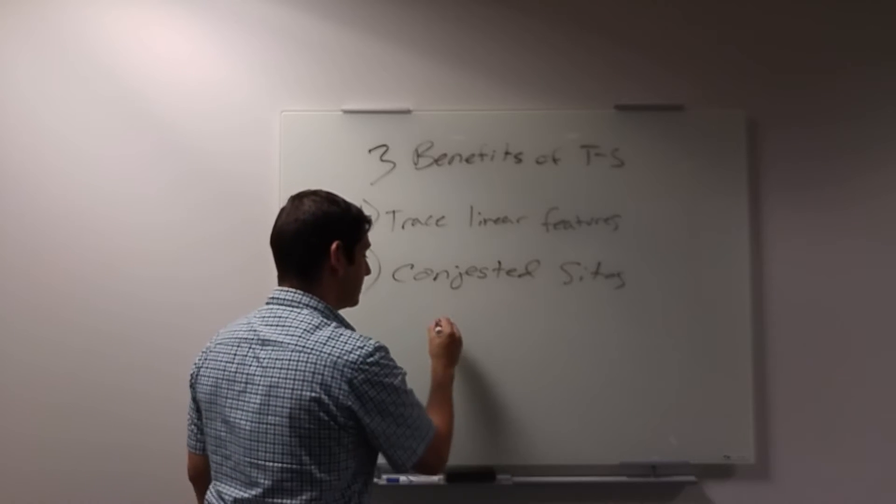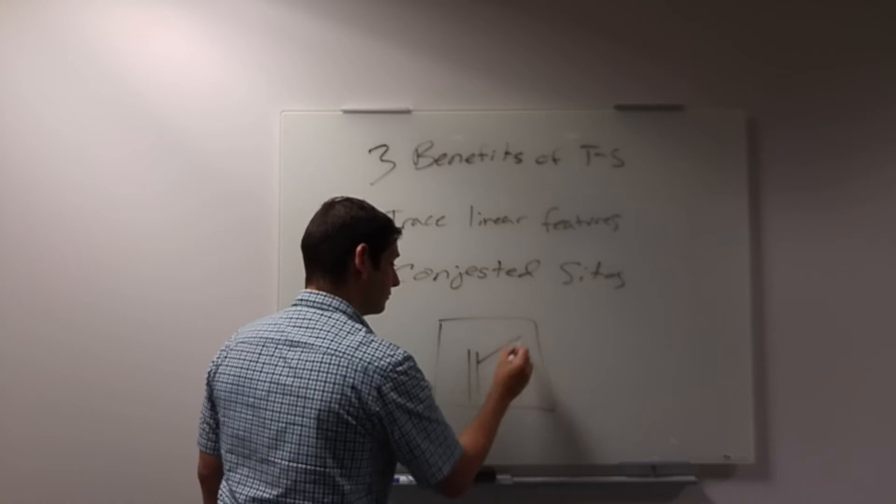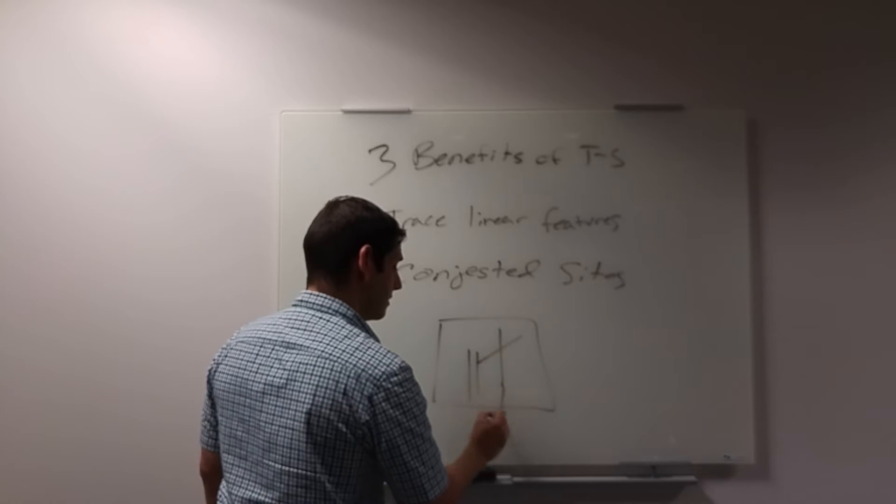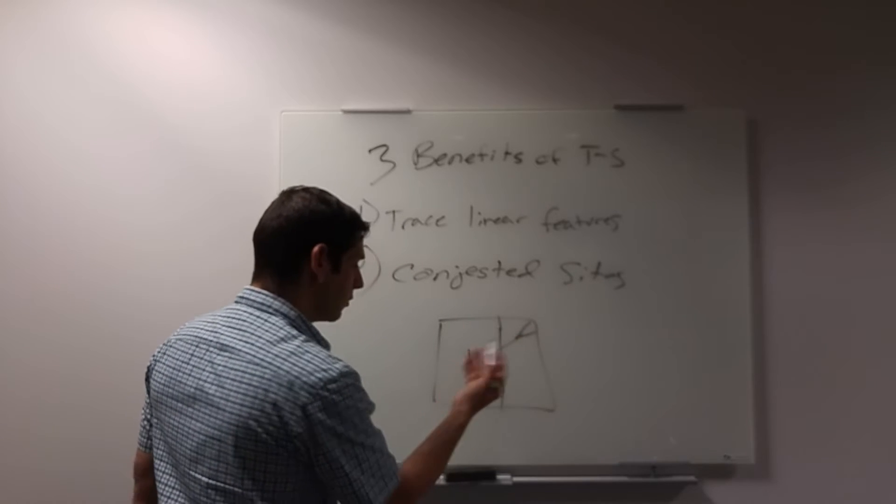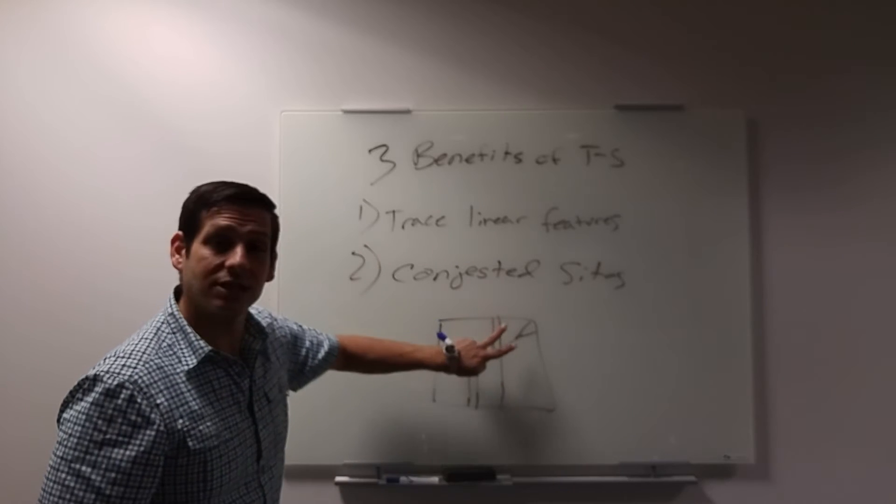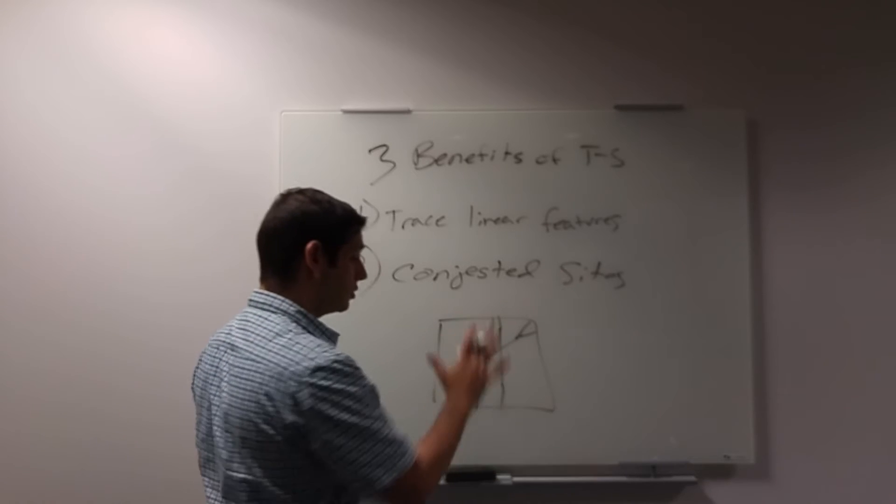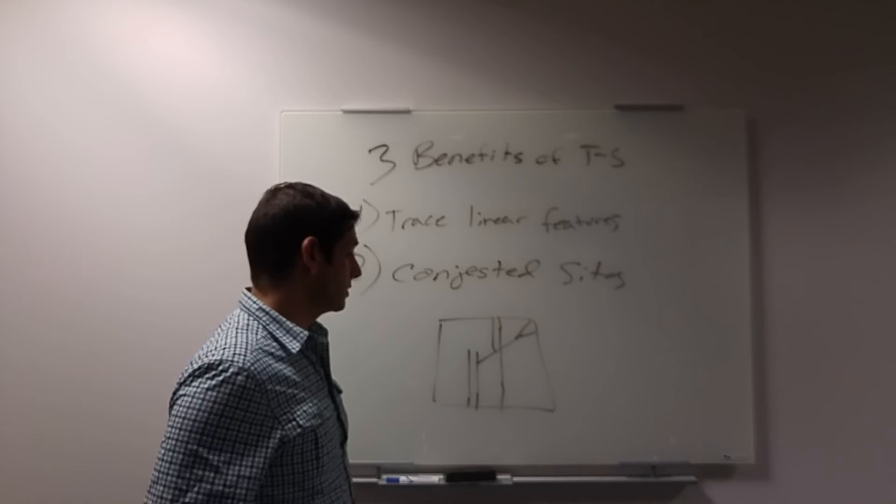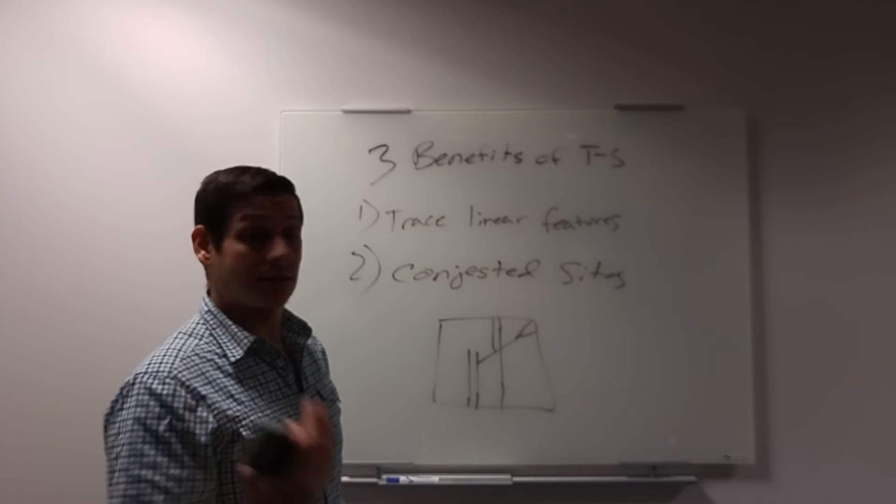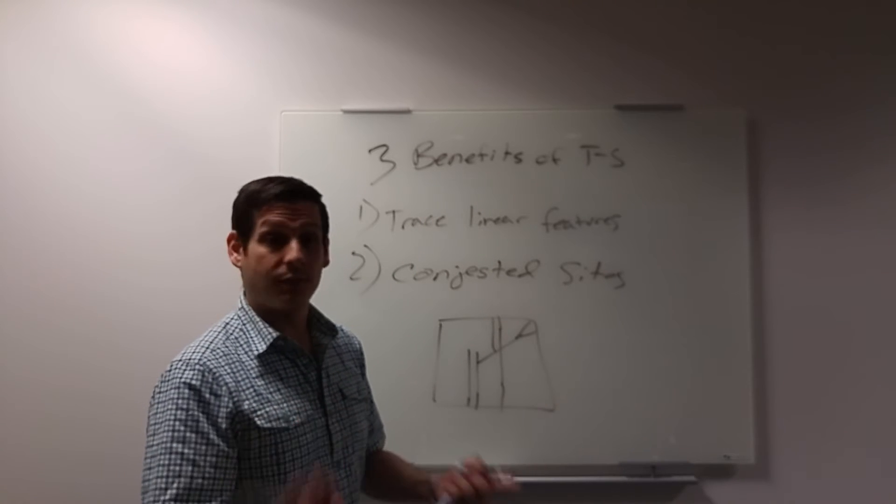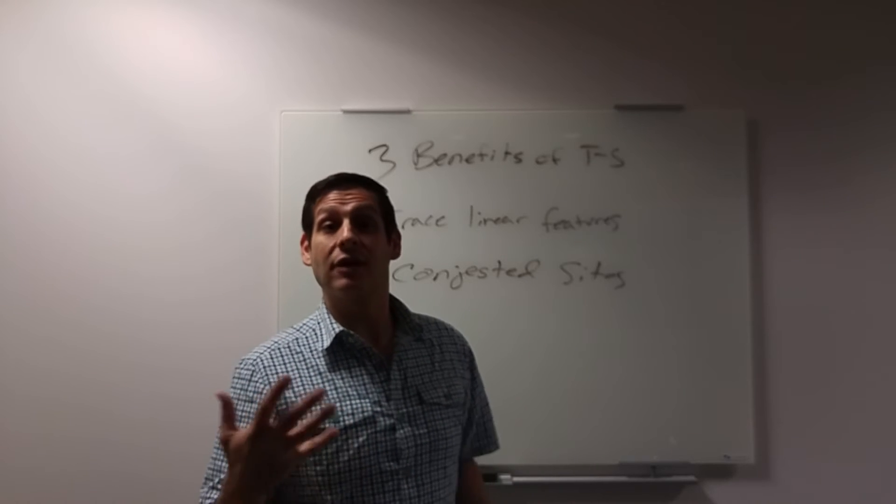But instead, when you're looking at time slices, here's a top-down view, you might see this way, maybe this one goes off in that direction, whatever the case may be. On congested sites, it's sometimes easier to interpret when you're looking top-down, especially if you migrate the data properly. It can be easier sometimes to make interpretations of what's below the surface on congested sites. So I highly recommend using time slices on congested sites, and it could be rebar and conduits, pipes and utilities, whatever the case may be. Time slices can be very, very helpful.